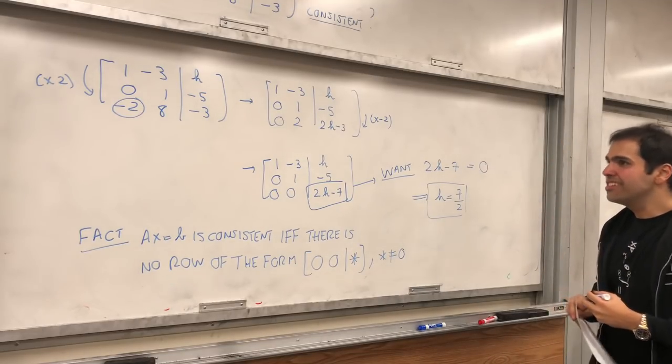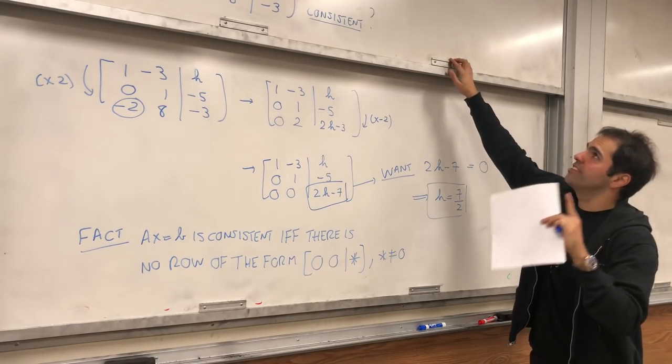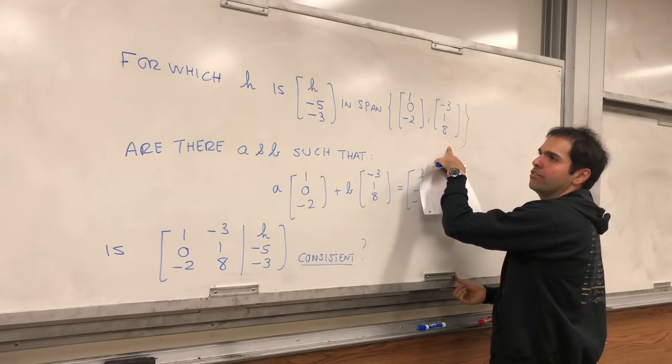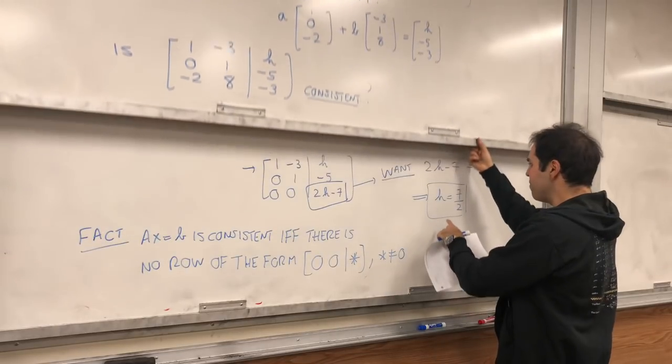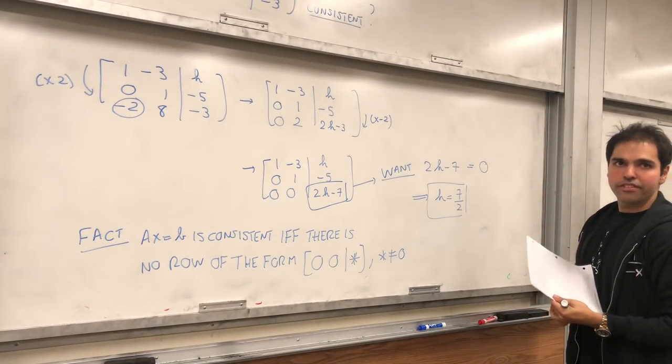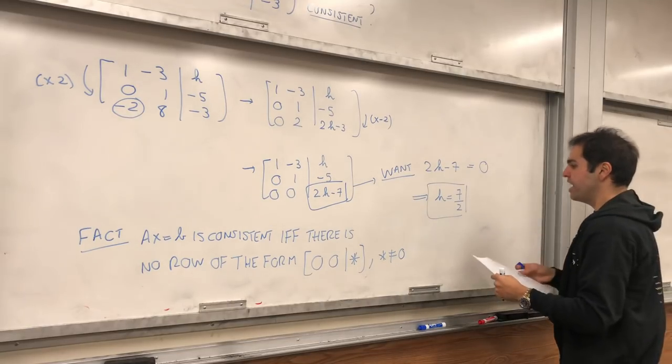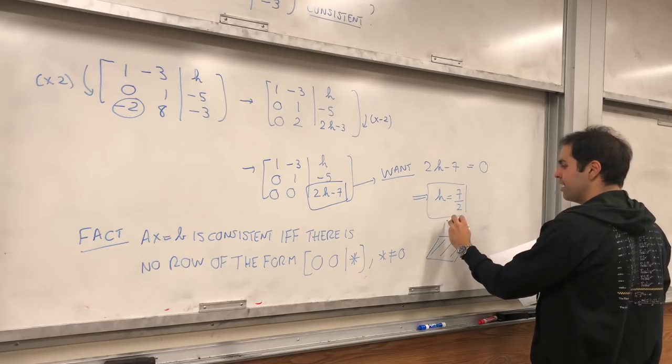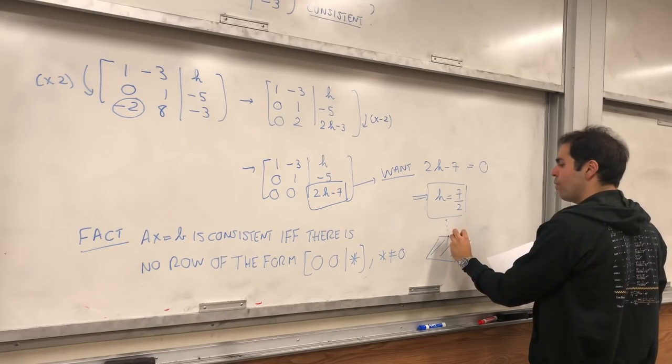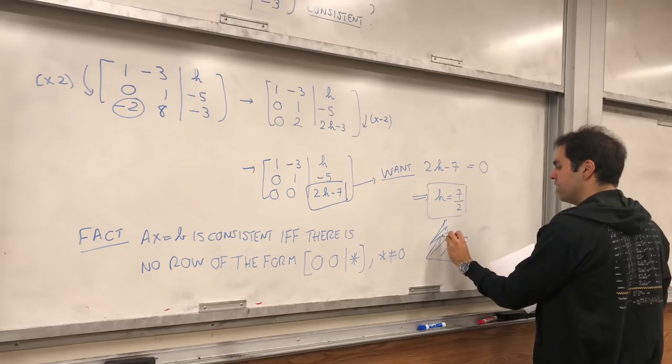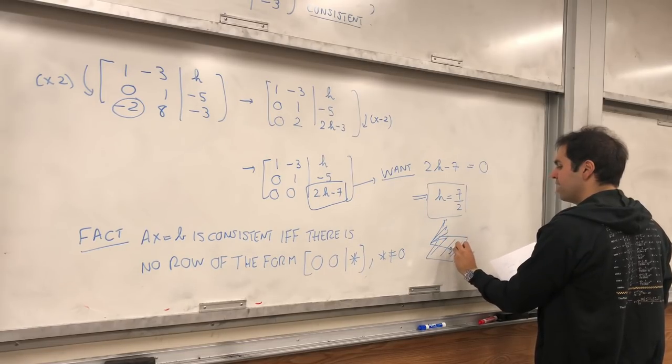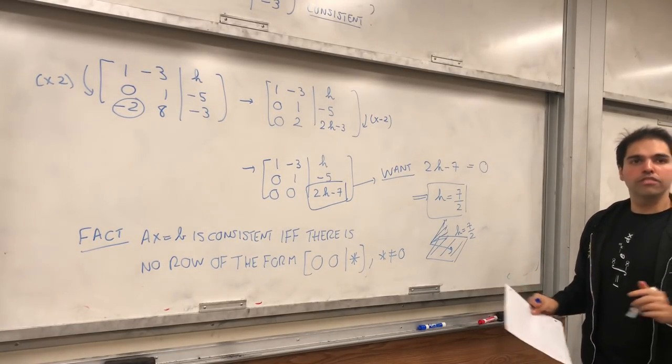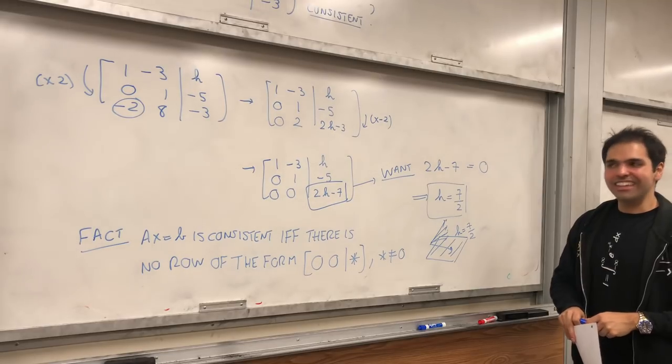So this is very interesting. There is precisely one value of h such that this vector is in the span of those two vectors, namely, h equals 7 halves. And the interpretation is the span of those two other vectors, well, it's a plane. And, well, there's precisely one value where this other vector is precisely in the plane, and that is for h equals 7 halves. That's nice. All the other values, it's not in that plane. It's very neat.